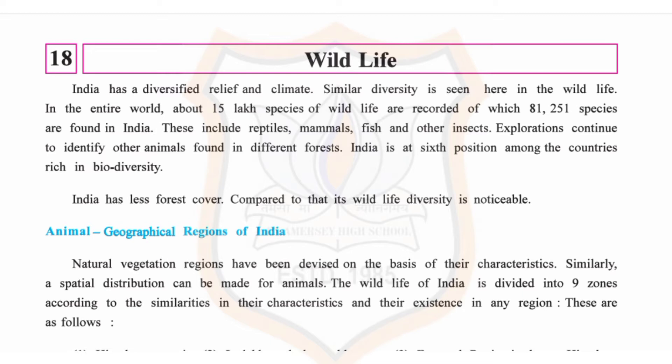In the entire world, about 15 lakh species of wildlife are recorded, of which 81,251 species are found in India. These include reptiles, mammals, fish, and other insects. Explorations continue to identify other animals found in different forests. India is at the sixth position among the countries richest in biodiversity.